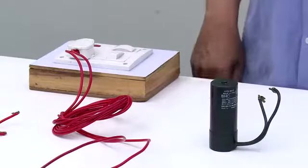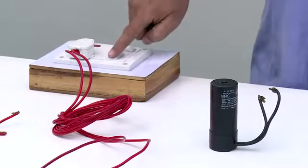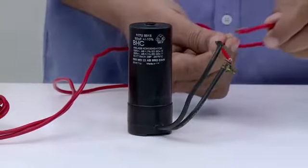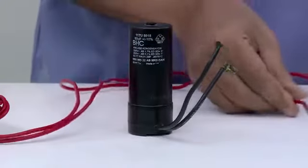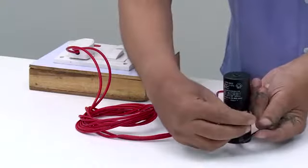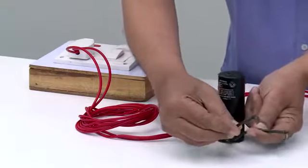Let's test the capacitor by applying rated mains voltage to it for a few seconds, and then short circuiting the leads. If spark appears, the capacitor is in order.